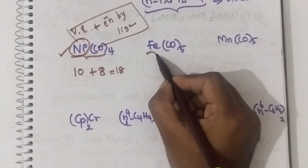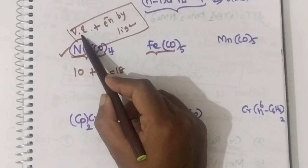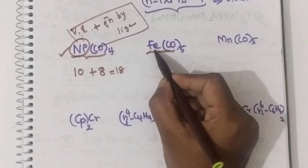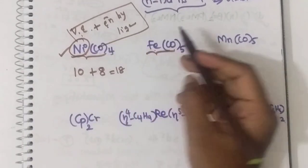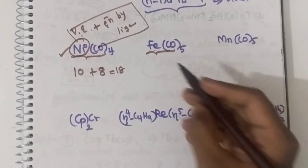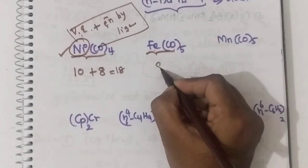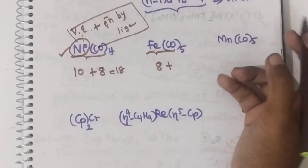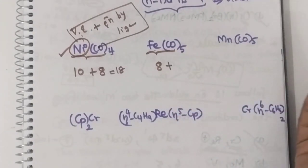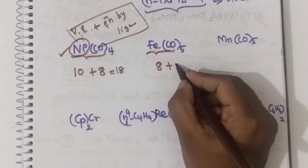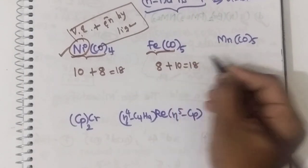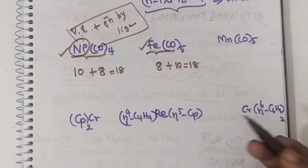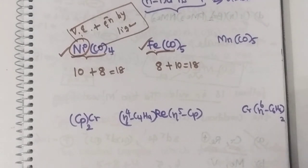In the very first case, nickel tetracarbonyl. The valence electron of nickel is 10 — 3d8, 4s2 configuration. One carbonyl can donate 2 electrons, and here 4 carbonyls are there, so 4 × 2 = 8. Total: 10 + 8 = 18 electrons. Hence, this complex obeys the 18 electron rule and nickel tetracarbonyl will be stable.